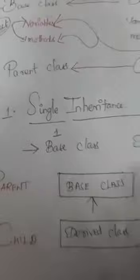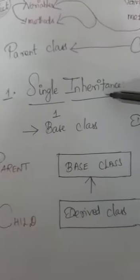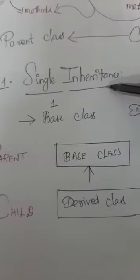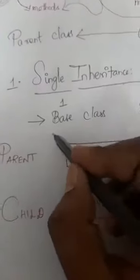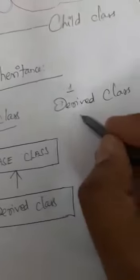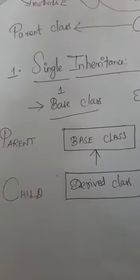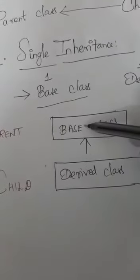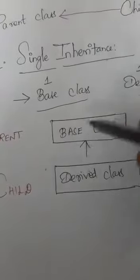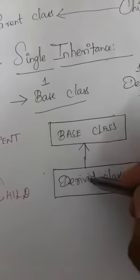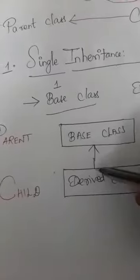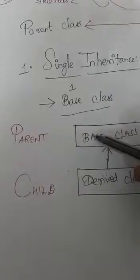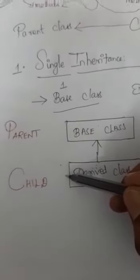There are different types of inheritance in Python programming. The first one we are going to discuss is single inheritance. A single inheritance is an inheritance which has only one base class and one derived class. The arrow is represented from bottom to top, showing the derived class acquiring the properties of the base class. The base class is the parent class and the derived class is the child class.